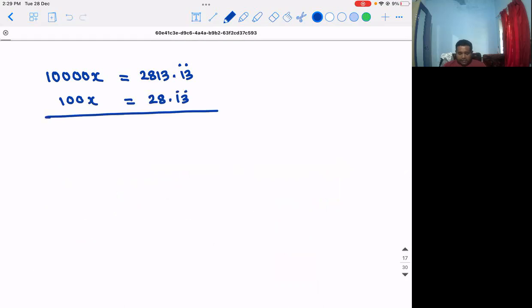I'm subtracting this. 10,000 minus 100 is 9,900, so 9,900x equals what? If I'm subtracting this, the recurring part cancels, so we're getting an integer. What is that? 2785.